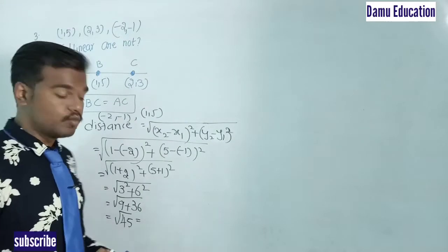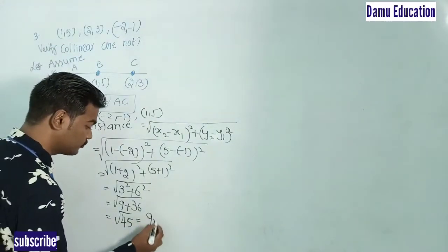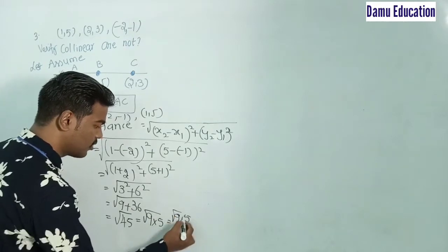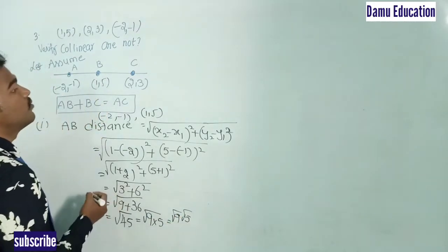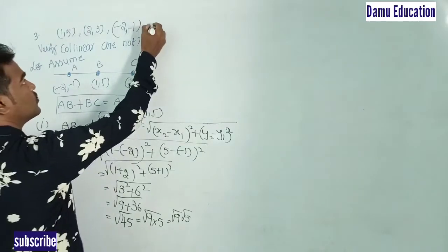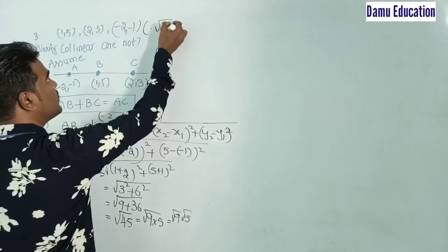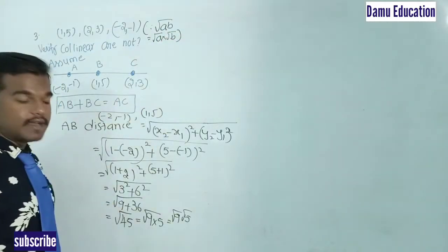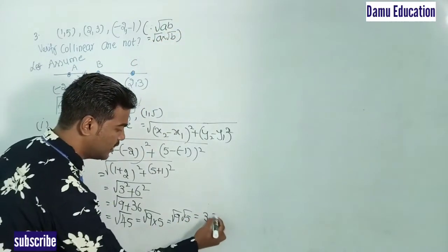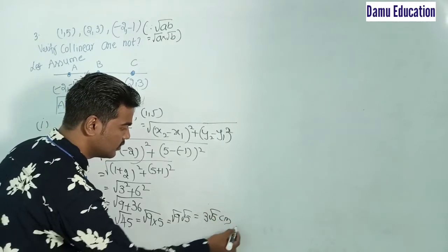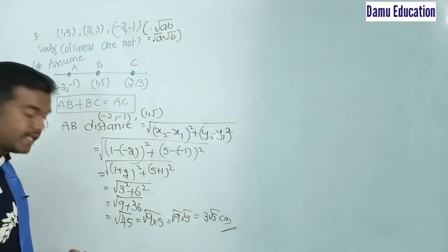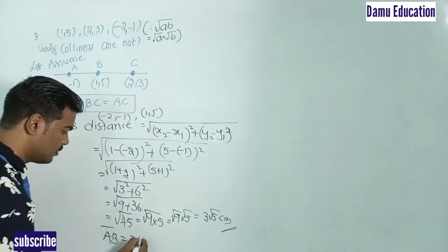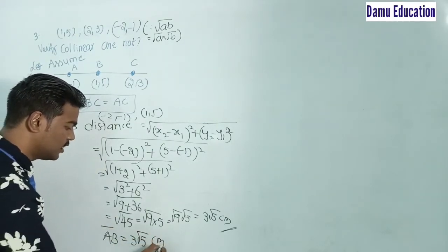We can simplify √45 by writing 45 as 9 × 5, so √45 = √9 × √5 = 3√5, using the property that √(ab) = √a × √b. Therefore the distance AB = 3√5 centimeters.